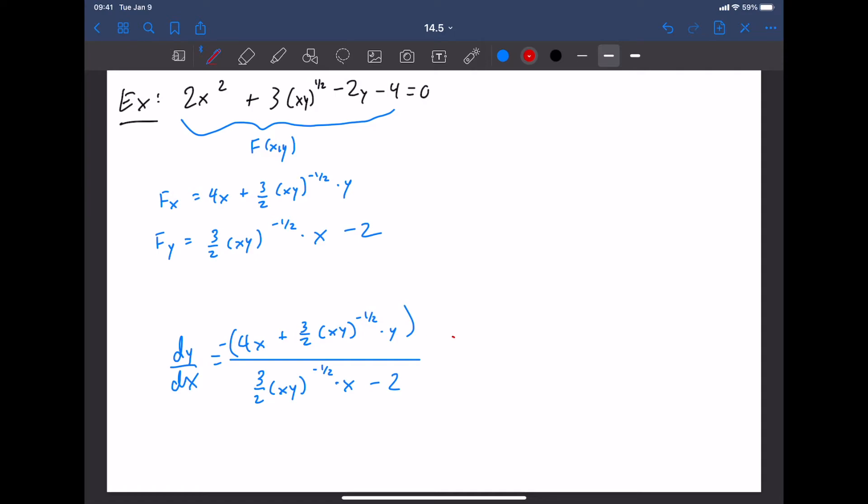To clean that up, if you ever were interested in cleaning up something like that, you could multiply the top and the bottom by 2 root xy. That will undo this part and the 2. And if we did all that, we would get negative 8x root xy plus 3y over 3x minus 4 root xy. A much nicer form just by multiplying by the square roots.